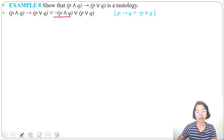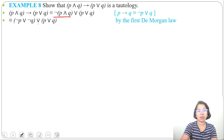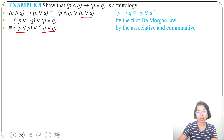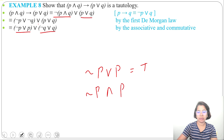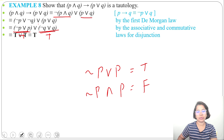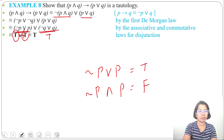Applying De Morgan's law to negation of (p and q), we get (negation p or negation q), then OR (p or q). Applying the associative law, we rearrange as (negation p or p) or (negation q or q). By the negation law, (negation p or p) is true and (negation q or q) is true. In the case of OR, false or false is false but everything else is true. So (true or true) is true. This proves (p and q) implies (p or q) is a tautology.